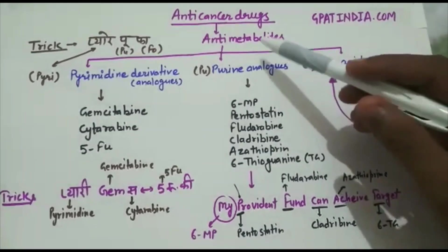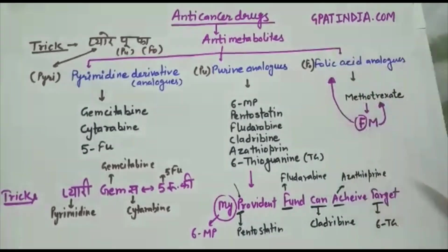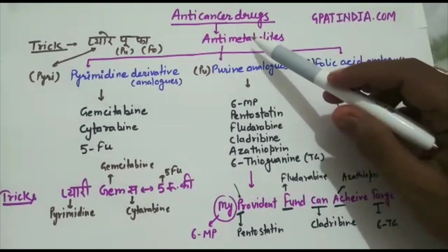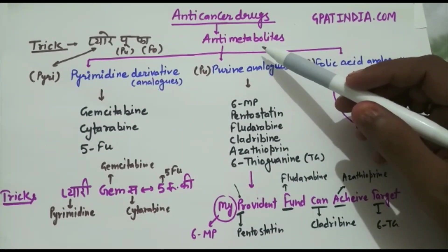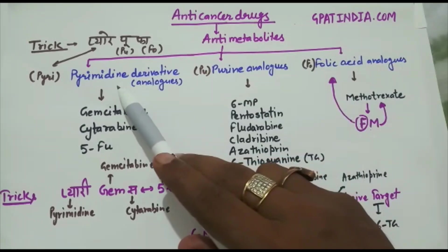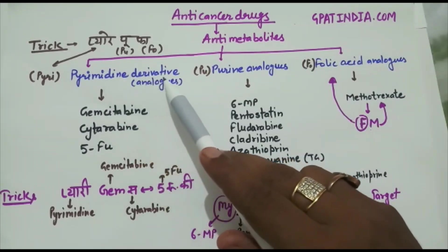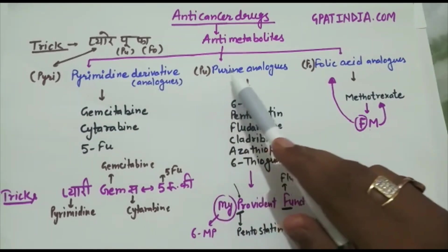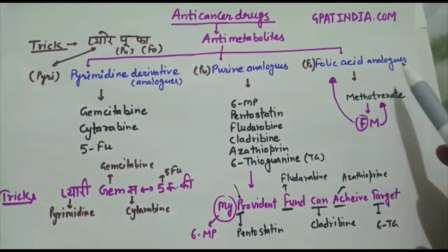Hello everyone, today we will learn anti-cancer drugs classification. In anti-cancer drug classification, there is one category that is anti-metabolites. In anti-metabolites we have three kinds of drugs: pyrimidine derivatives or pyrimidine analogs, second one is purine analogs, and third one is folic acid analogs.